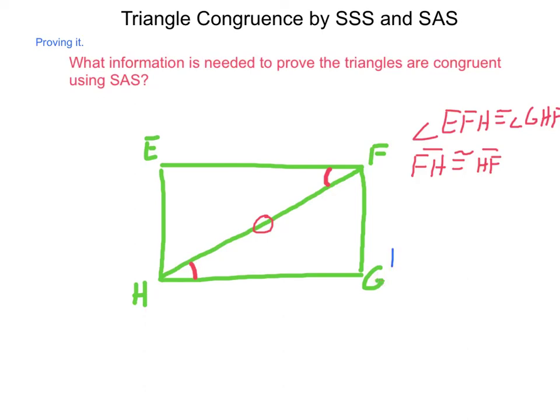So, we need HG to be congruent to, well, here's our side, our angle, here would be the other side we need, and that is FE. If we had that piece of information, we'd be able to prove by side-angle-side that these two triangles are congruent.